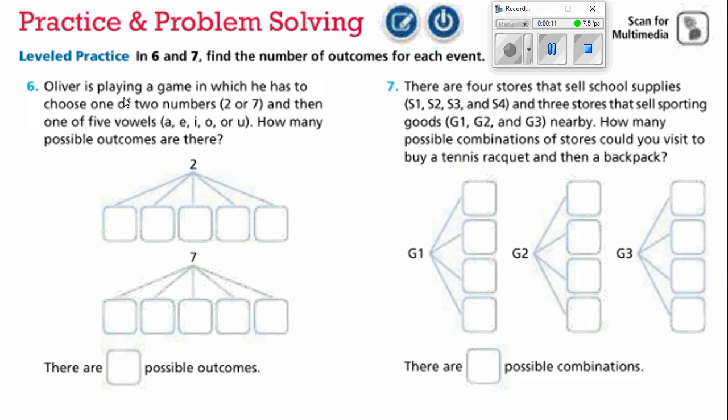It says Oliver is playing a game in which he has to choose one of two numbers, 2 or 7, and then one of five vowels: A, E, I, O, or U.